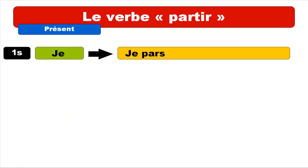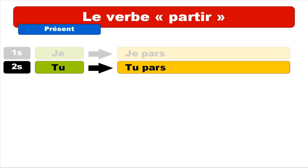So let's start with the first form. First person singular is Je, and we get Je pars. It ends with an S, but we don't pronounce it, so Je pars. And for the second person we've got Tu pars.